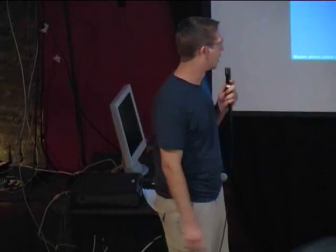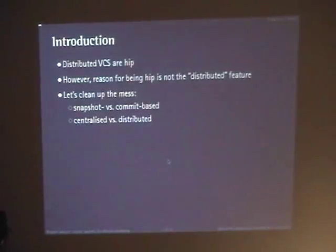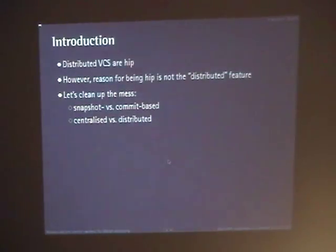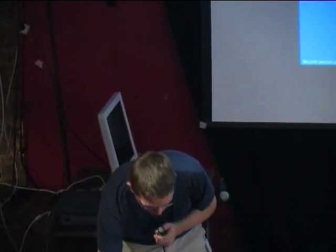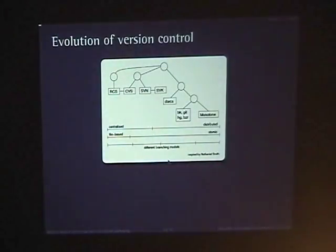So I'll be looking here at cleaning up the mess — what is the snapshot versus commit-based version control system — and also, of course, talk about centralized versus distributed. Here is a brief overview of the evolution of version control.